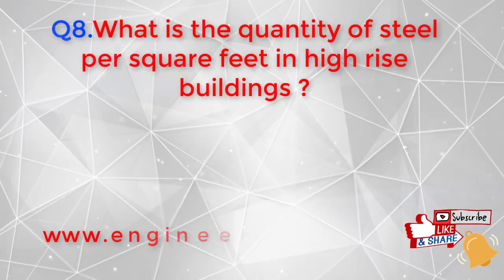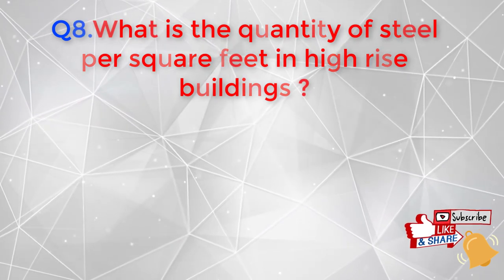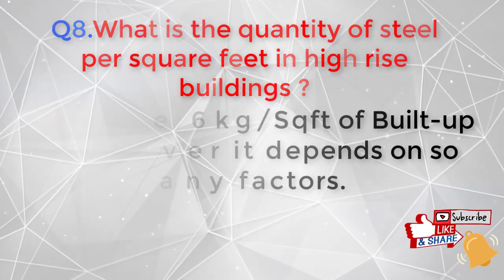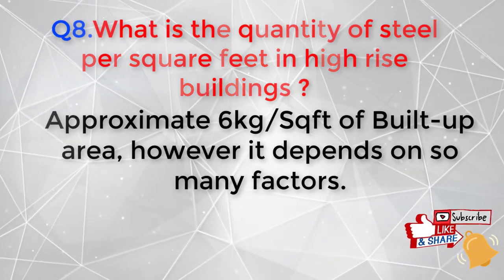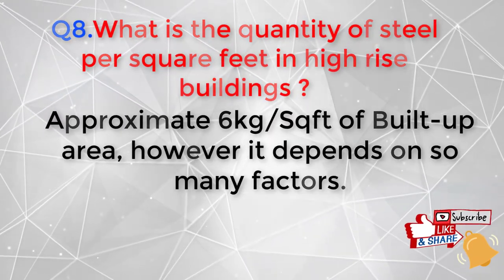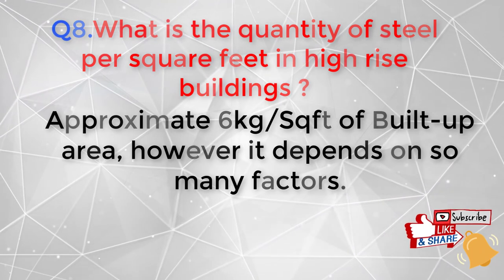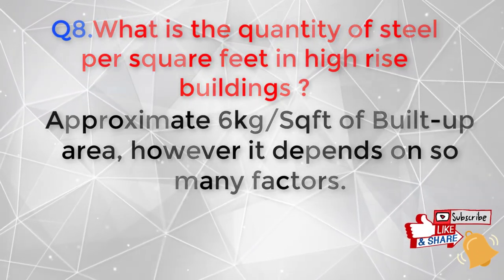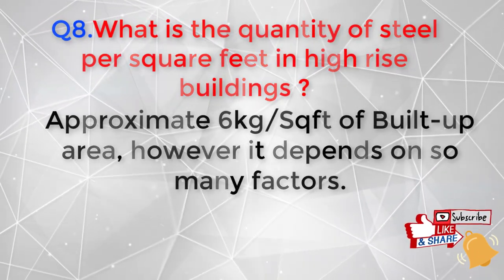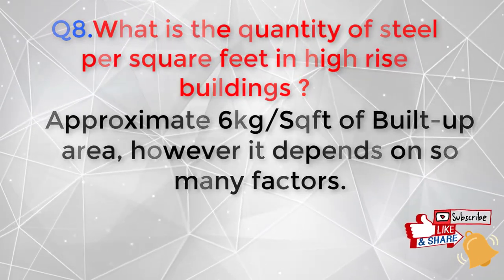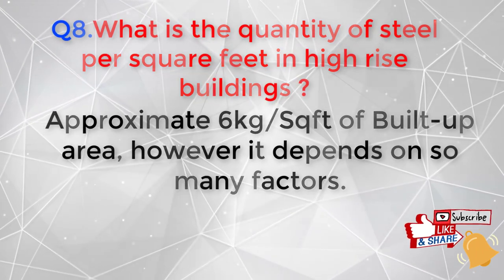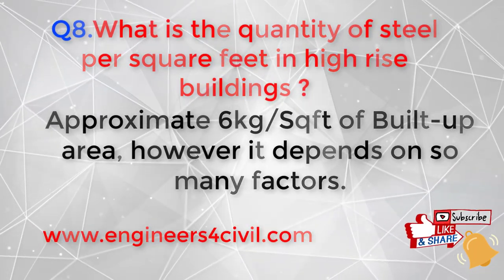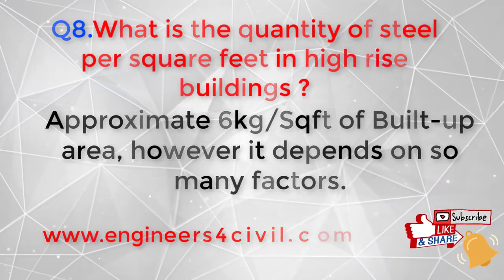The eighth question is: what is the quantity of steel per square foot in a high-rise building? There is no exact answer — it depends on many factors — but approximately 6 kg per square foot of built-up area is a commonly used approximate figure.